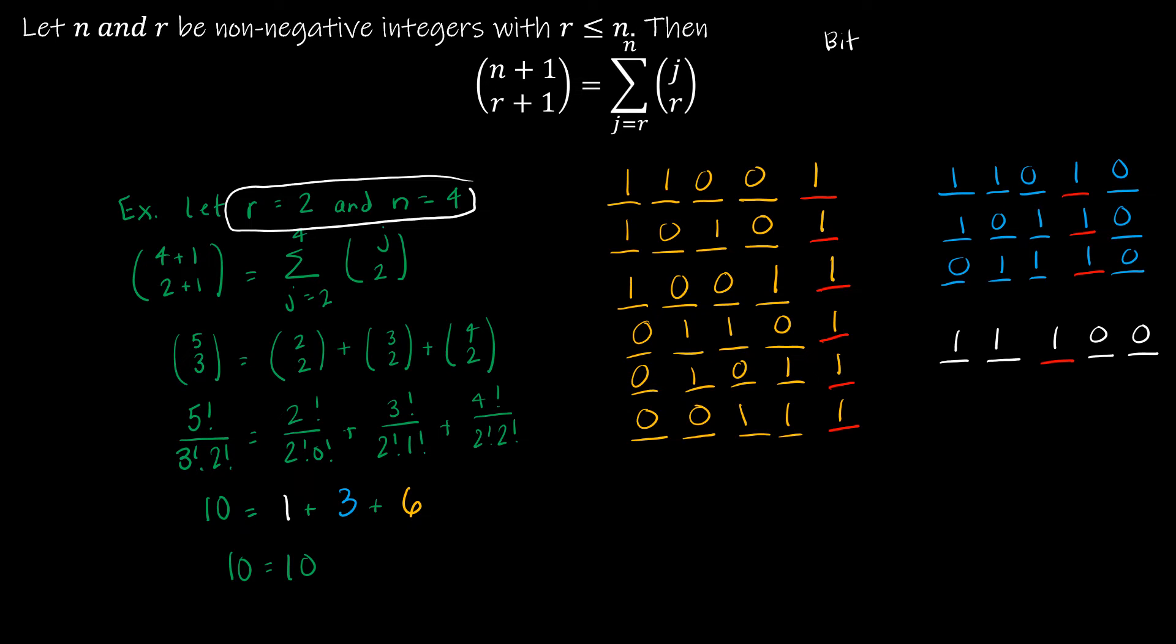And so I'm saying I'm going to have a bit string, which is a string of zeros and ones. So a bit string of length n plus 1. In this case, that's 5.